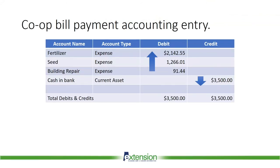Here's the accounting entry for the co-op payment. QuickBooks is a full-blown double-entry accounting system. In this example, fertilizer, which is an expense account, is debited for $2,142.55; seed is debited for $1,266.01; building and fence repair is debited for $91.44; and cash and bank, which is a current asset, is credited for $3,500. The total debits and credits equal $3,500, so QuickBooks handles the basic double-entry accounting equation just fine.